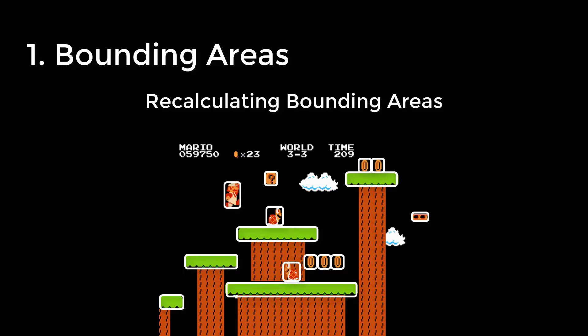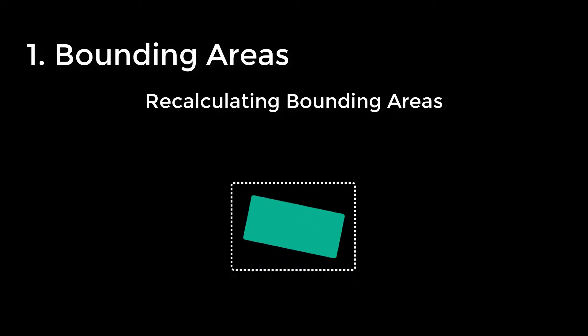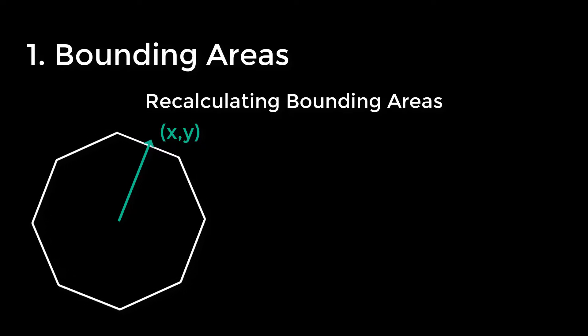The bounding areas can actually be the shapes that you want to test in your collision engine, and if that's the case, you never need to recalculate your bounding areas. But if your physics engine incorporates objects that rotate or change their size, then you will. Calculating the bounding box for a polygon is pretty straightforward — you just need to loop through all of the vertices of the polygon and take the maximum and minimum x and y values. This is complicated by the fact that those x and y values change as the shape rotates, so before you can use a bounding box to do a preliminary collision test for a polygon, you may first need to recalculate the bounding box by calculating all of the rotated positions for each vertex.